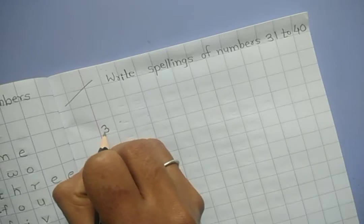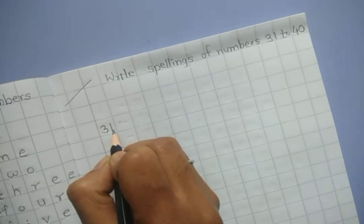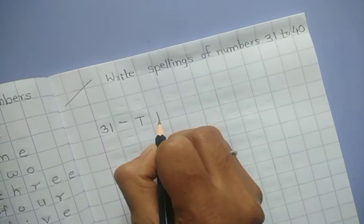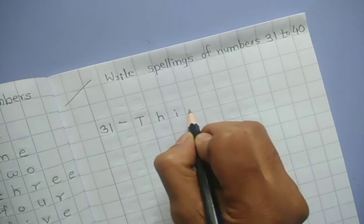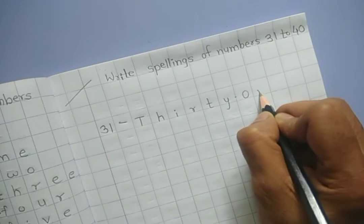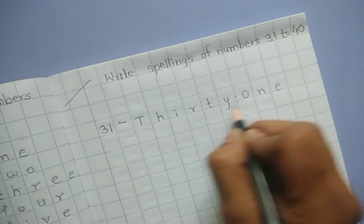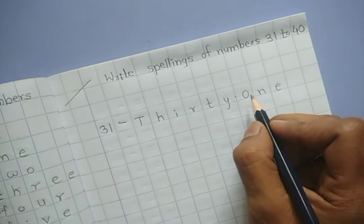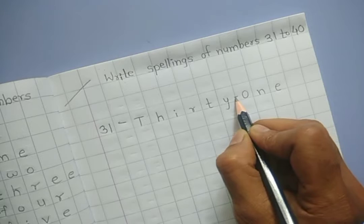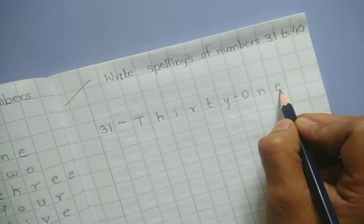31, T-H-I-R-T-Y-O-N-E, thirty-one. Students, this is the spelling of 30 and you have to join the spelling of 1. First you have to write 30's spelling and then join 1's spelling.